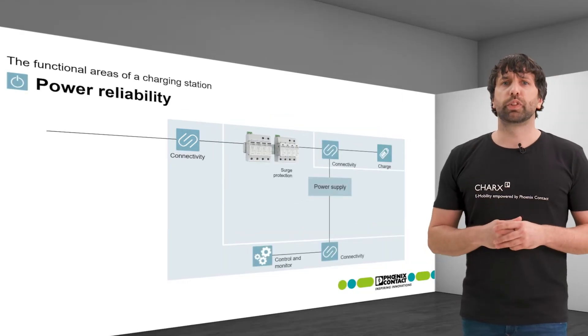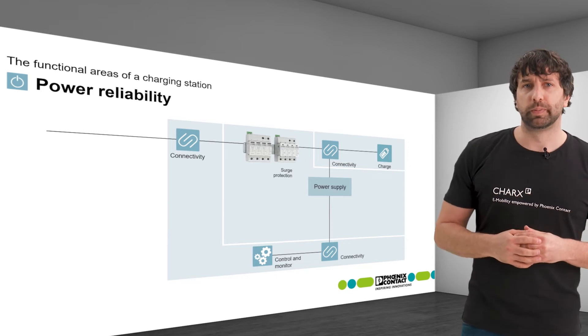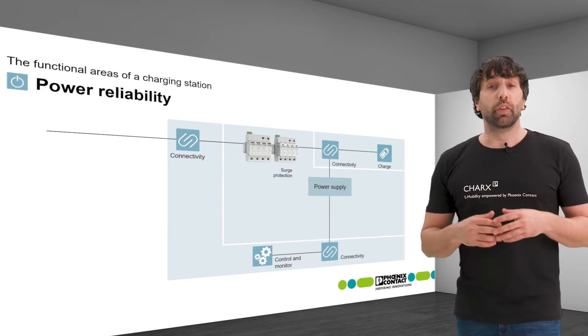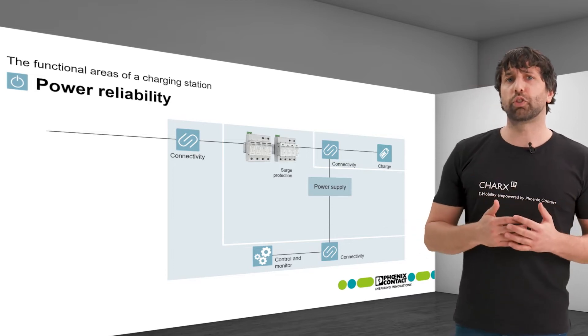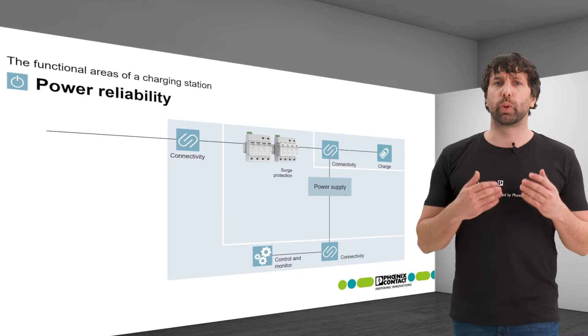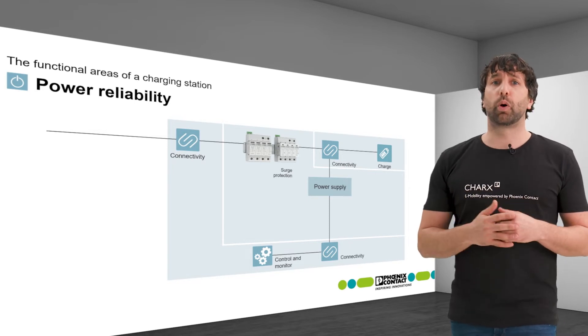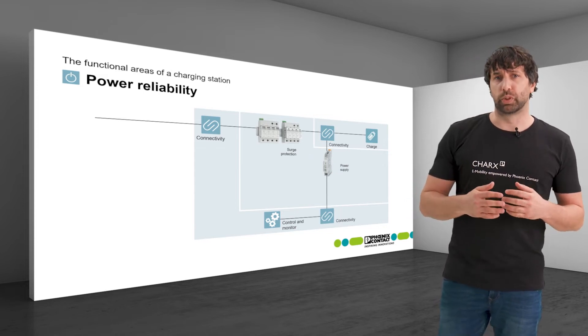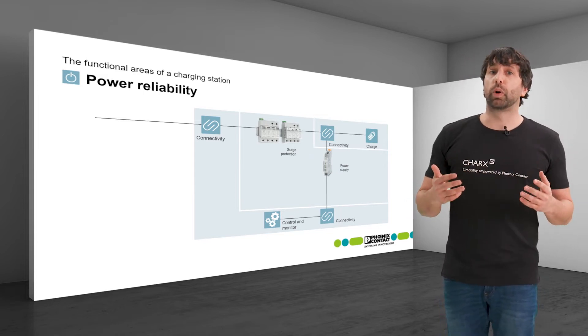Downstream of the surge protection the supply branches off. One side supplies the functional area CHARGE. Another path supplies the charging controller and other internal components with 12 or 24 V DC via the power supply unit. In most cases our STEP power supplies are used which are available in different power classes.